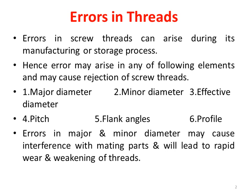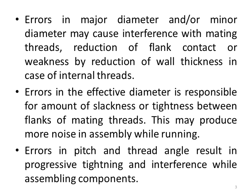Error may arise in any number of such parameters of the screw threads. Errors in major and minor diameter of the screw thread may cause interference with mating parts, leading to rapid wear, weakening of the screw threads, reduction of flank contact, or weakness by reduction of wall thickness in case of internal threads.